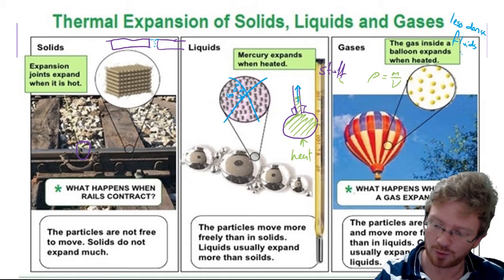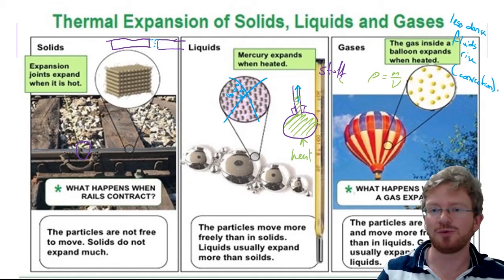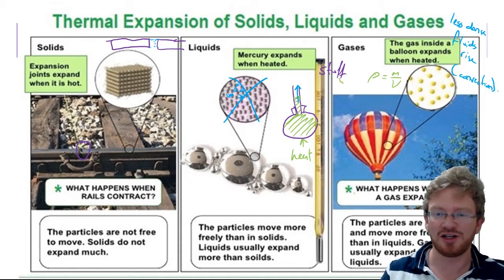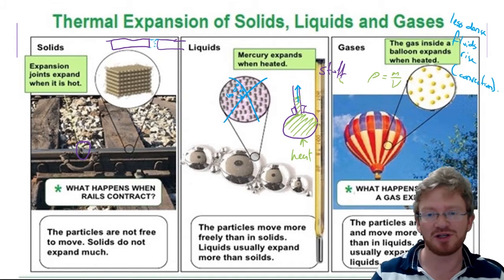So in a hot air balloon, what we do is we have such a huge amount of very low density gas, just because it's hot, that the hot air balloon becomes less dense than its surroundings, and it floats up.